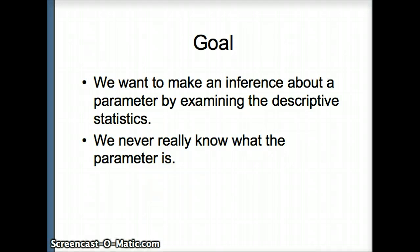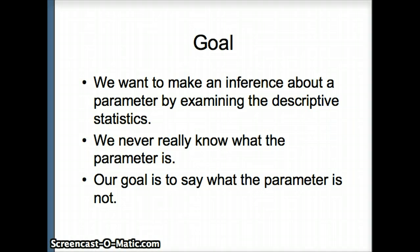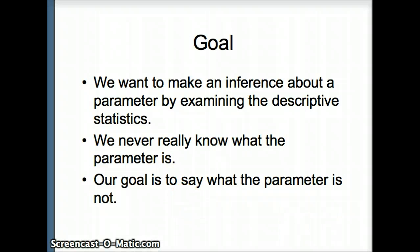we don't say what the parameter is. You're never going to say that we have evidence that mu equals 5, or we have evidence that sigma is 12. Rather, we want to say what the parameter is not. We might say we have evidence that the mean is not 10, or we have evidence that the standard deviation is more than 6. So hypothesis testing doesn't tell us what the parameter is, but rather it tells us what it isn't.